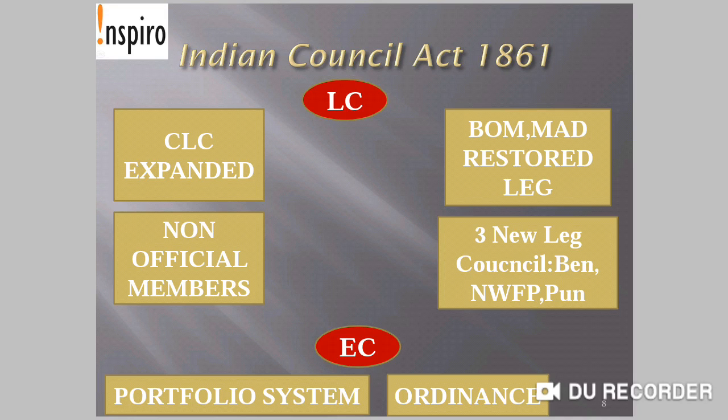Other than the Legislative Council provisions, there were two executive-related provisions. One is the Portfolio System. The Portfolio System was started by Lord Canning in 1859 and got the approval of the government. Portfolio System means each member in the Viceroy's Executive Council was given an independent charge of a department, and would be finally responsible for taking final orders under that department.